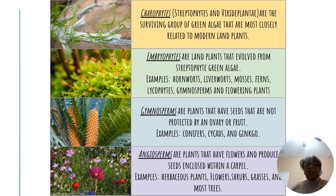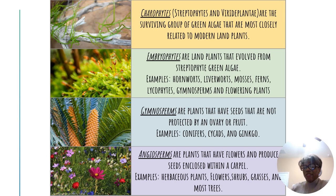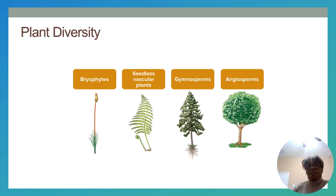Among charophytes, I want to highlight streptophytes — a type of charophyte thought to be the species from which land plants developed. Embryophytes are land plants that evolved from streptophyte green algae. To put things in perspective: many plants started as green algae, then developed various adaptations, evolved into land plants, and from there diversified into various other species.